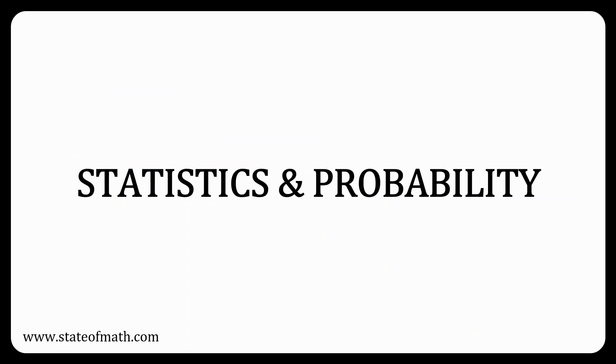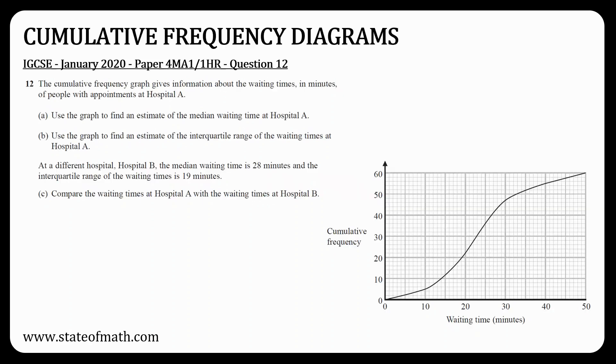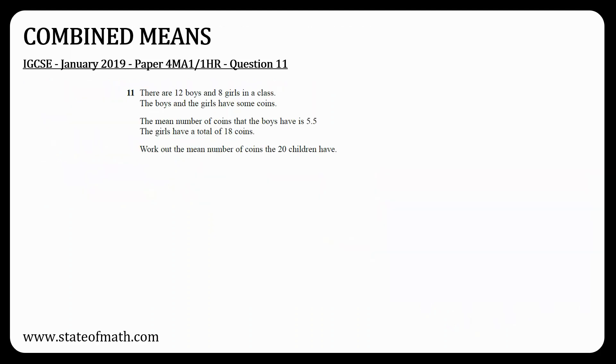Moving on to statistics and probability. There was no cumulative frequency diagram questions, so be prepared for one. You could be given one and asked various questions on it, or you could be asked to draw one. Although paper 1 had a simple question involving the mean, a question on combined means is possible to appear. In my video solutions I usually construct a table for this type of questions, but you can present your answer in any way you feel comfortable.